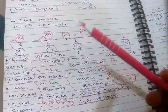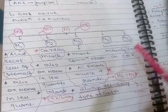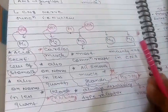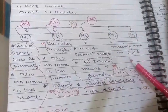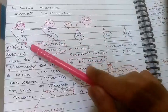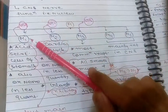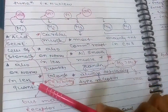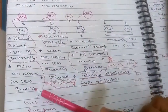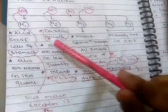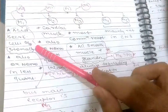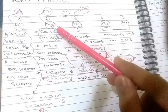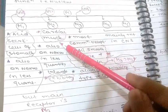M1, M2, and M3 are the important subclasses of the muscarinic receptor. M4 and M5 are not as important and mainly present in the CNS. M1 is present on acid-secreting cells of the stomach and also on nerves in lesser quantity.